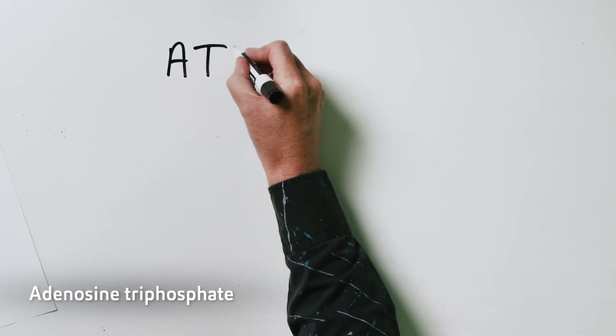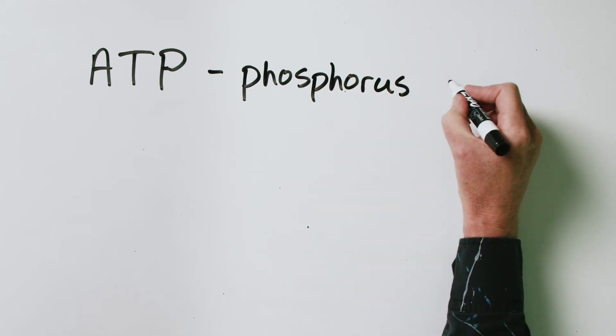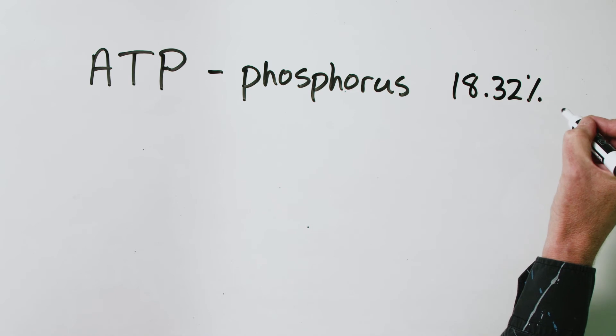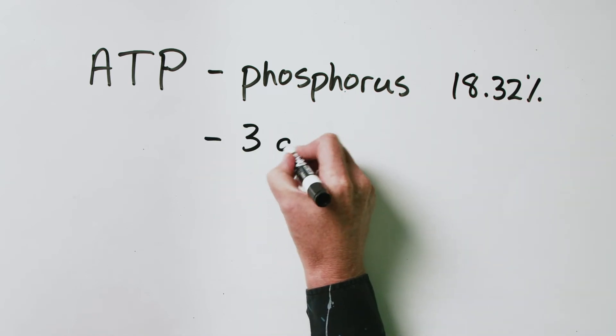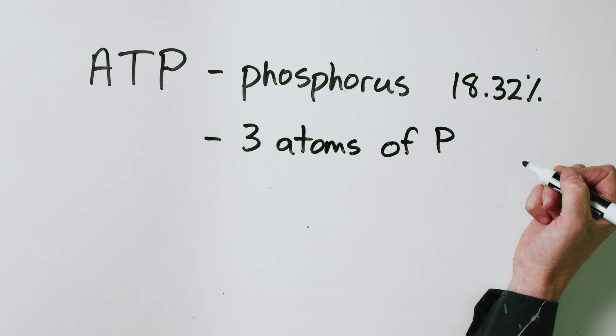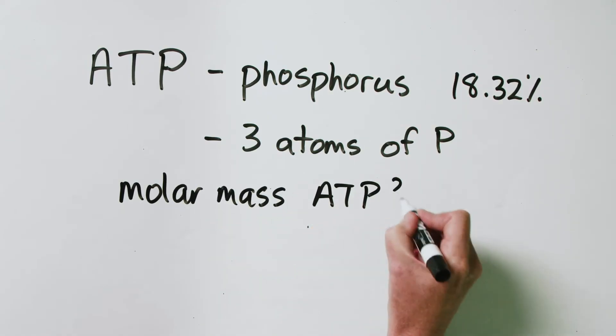Let's have a look at a similar kind of problem. There's a molecule called ATP — adenosine triphosphate — which is very important in biological energy production. As the name suggests, it contains the element phosphorus. By mass, phosphorus is 18.32% of the whole ATP molecule, and we also know there are three atoms of phosphorus per molecule of ATP. So our question is: what is the molar mass of ATP?